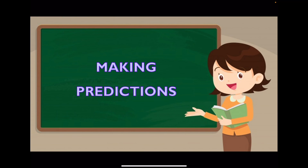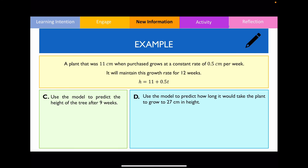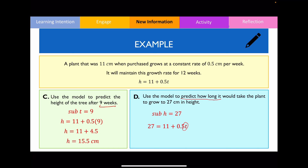The last topic is how to make predictions using our linear model. We simply substitute values into the equation and rearrange to solve for the unknown. For Part C, predict the height after 9 weeks: substitute t = 9, giving 0.5×9 = 4.5, plus 11 equals 15.5 centimeters. For Part D, find the time for the plant to reach 27 centimeters: substitute h = 27, subtract 11 from both sides, divide by 0.5, giving t = 32 weeks.